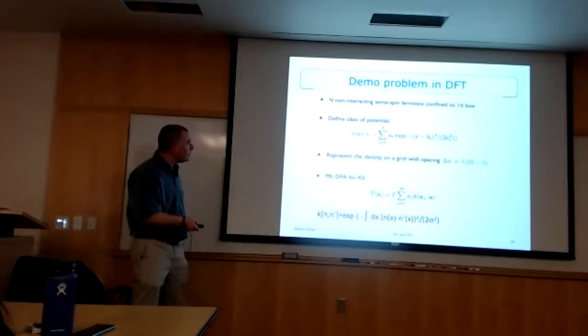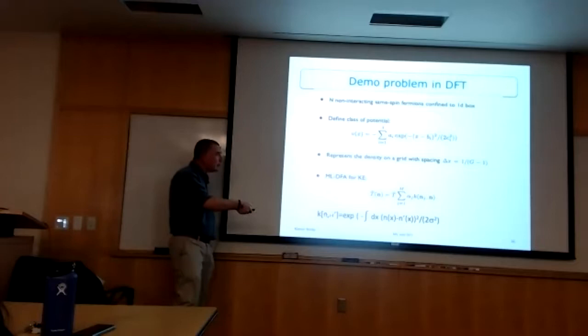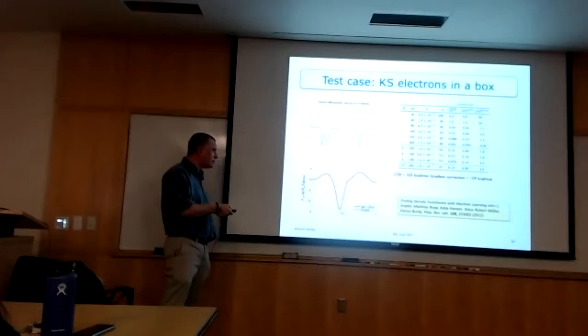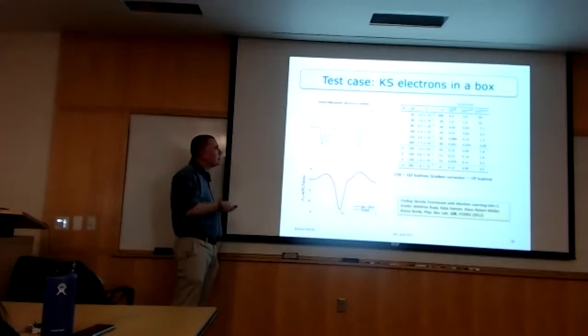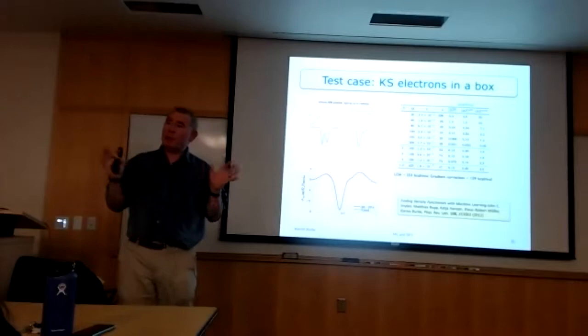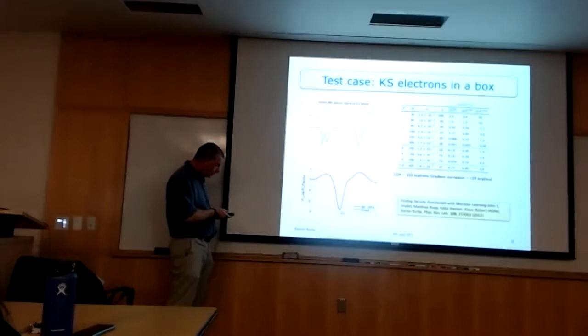What we did was take a simple problem — particles in various boxes with different potentials — and asked: could we figure out their kinetic energy as a functional of the density? Nobody had ever been able to do that accurately enough. We used a Gaussian kernel, but in the density space, so it's fully non-local — very different from human-designed functionals. Within a few weeks, a graduate student here, John Snyder, and Matthias Rupp as postdoc, were quickly able to get very high accuracy in the energies, though it took a while to figure out how to get the derivatives.